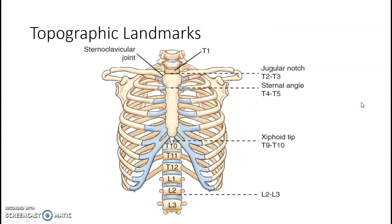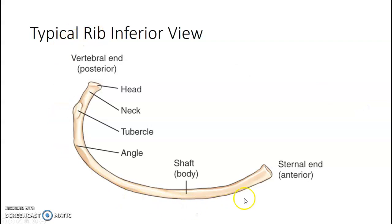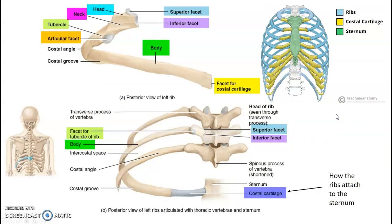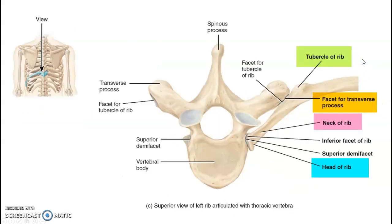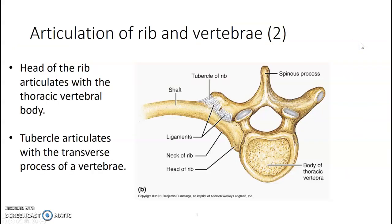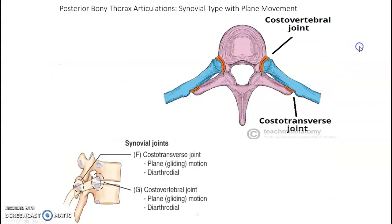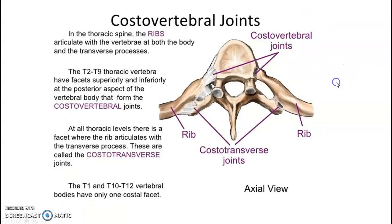Review anatomy. Look up your landmarks. This is anatomy for a rib — know it, love it. Know how the ribs attach to the sternum. Ribs lie in an oblique plane in the thorax, so the anterior ends are three to five inches lower compared to the posterior ends. There are two joints at the thoracic vertebrae: the costal vertebral joint and the costal transverse joint. The costal transverse joint is touching the transverse process of the vertebrae; the other is touching the vertebrae itself. Don't make it harder than it needs to be.